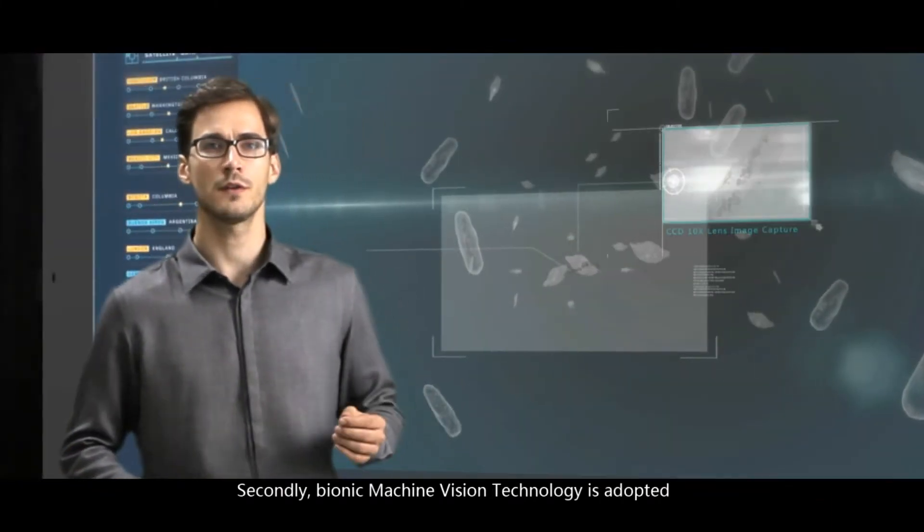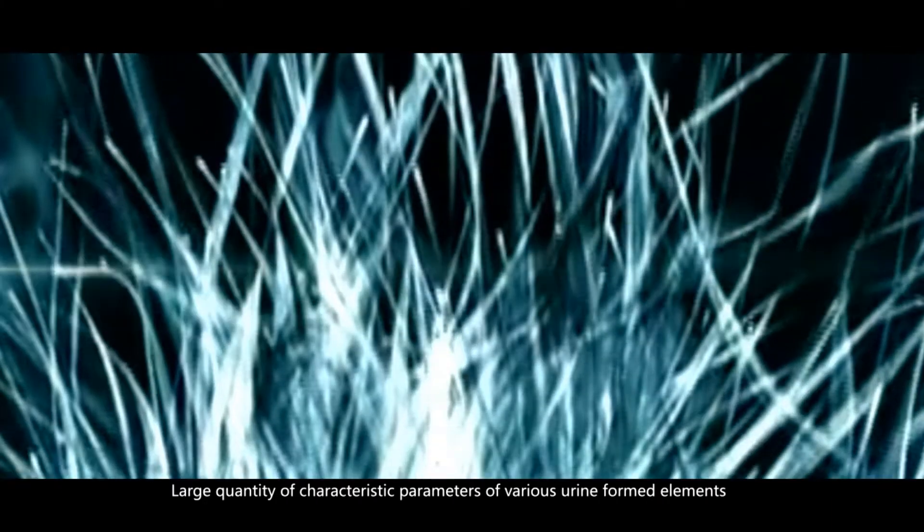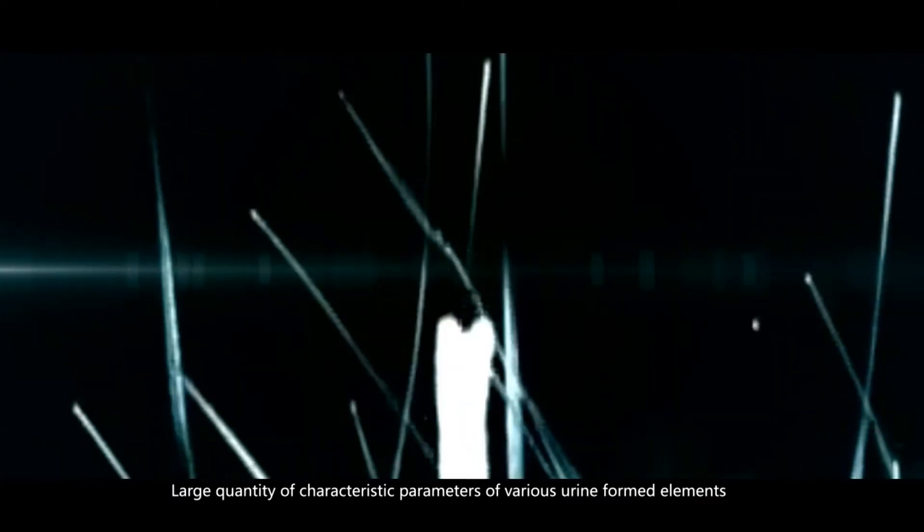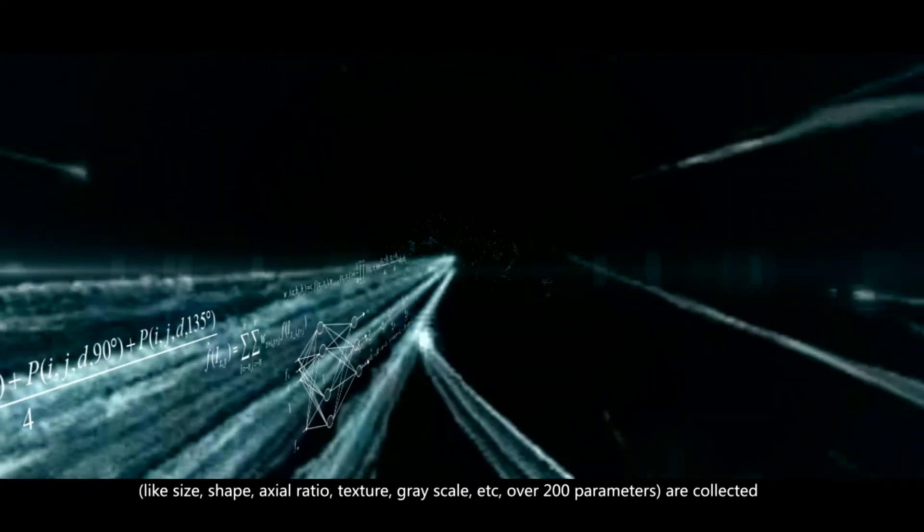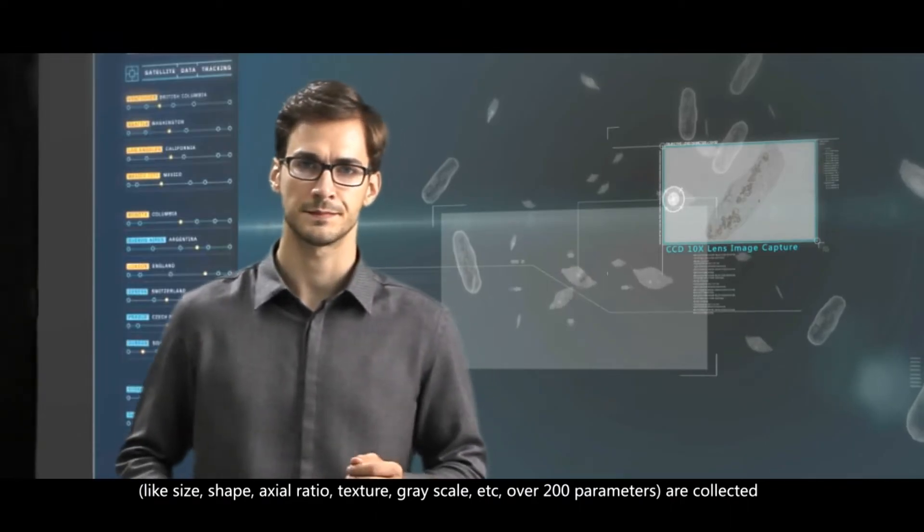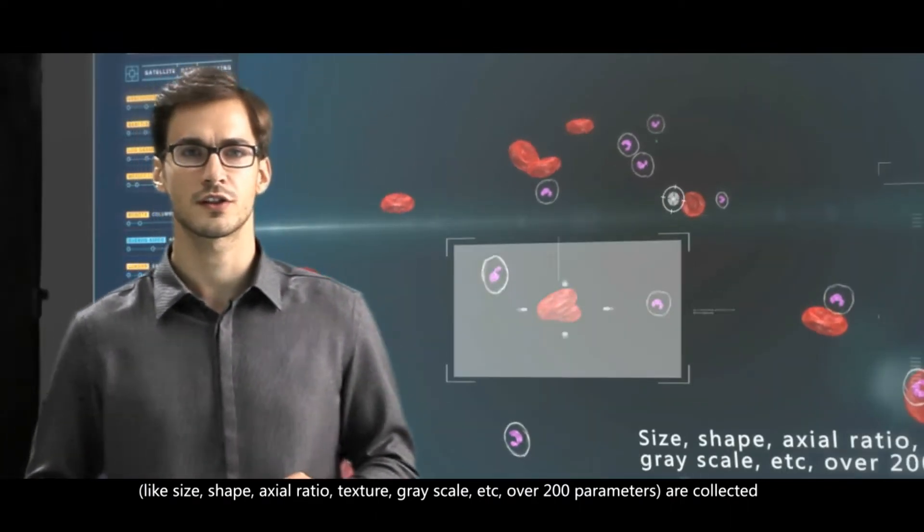Secondly, bionic machine vision technology is adopted. Large quantity of characteristic parameters of various urine-formed elements, like size, shape, axial ratio, texture, grayscale, etc. Over 200 parameters are collected,